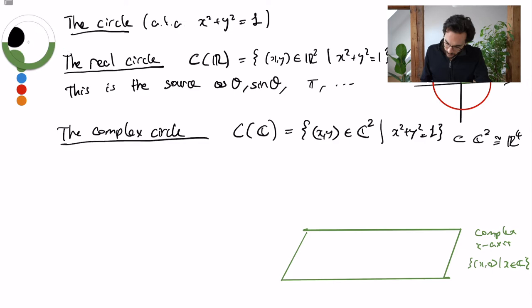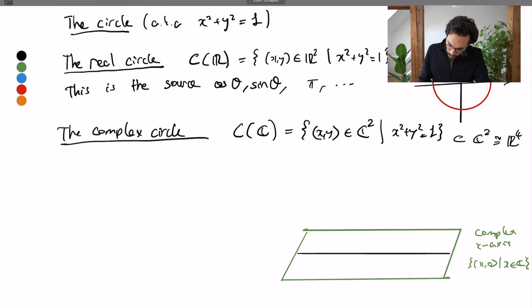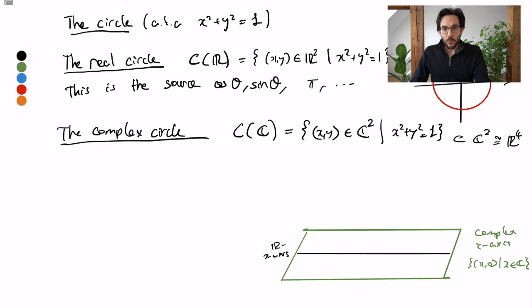So this is the complex x-axis, meaning the set x zero or x in the complex numbers. There will for instance be the real x-axis lying inside. Let me plot this as this black line, it's the real x-axis.